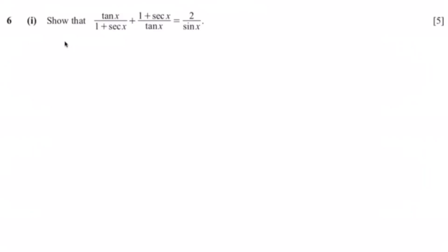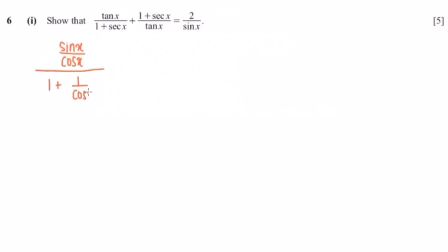In this question, we want to prove that the left hand side equals 2 over sine x. First, I'm going to change everything into terms of sine and cosine. So tan equals sine over cosine, and secant is 1 over cosine. That will give us 1 plus 1 over cosine x, all over sine x over cosine x.